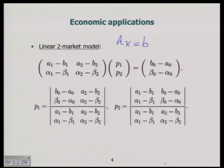Now, Matrix A is this one. The variables that we want to compute P1 and P2 are the X and then the parameters are b0 minus a0 and beta0 minus alpha0. And what we want to do is to compute P1 and P2 and we want to use Cramer's rule.